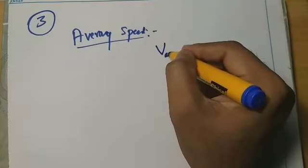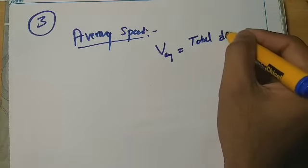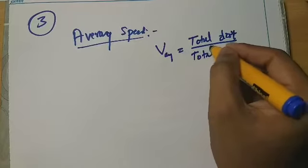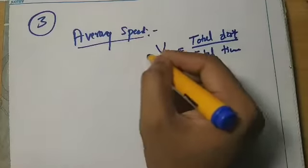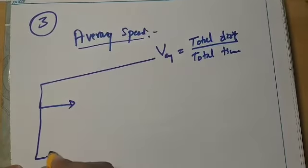V average is equal to total distance traveled by the body divided by total time taken. In particular, we have two special cases.